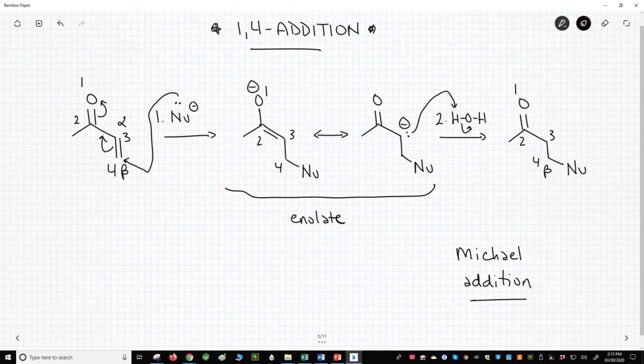There are a lot of factors to consider in a Michael addition. We'll focus on two ideas. One is the nucleophile in the reaction, which is called a Michael donor. We'll need to identify which nucleophiles prefer to do a Michael addition instead of a traditional 1-2 addition onto the carbonyl.